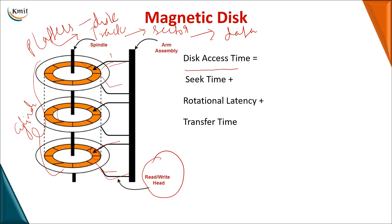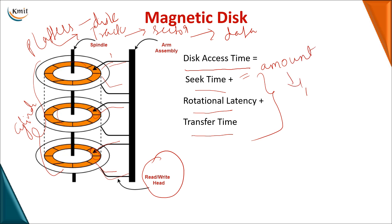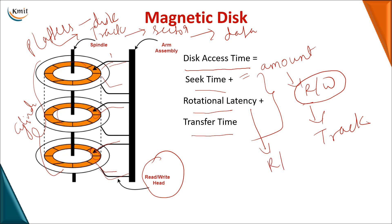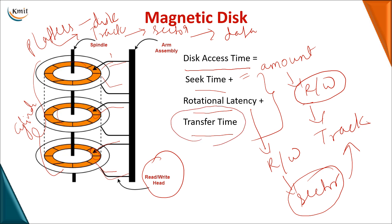The main important component of a magnetic disk is the disk access time. Disk access time is the summation of seek time, rotational latency, and transfer time. Seek time is the amount of time required for the read-write head to be placed onto the specified track. Rotational latency is the time required to place the head onto the required sector within that track. Transfer time is the amount of time required to read or write the data. Together, these three make up the disk access time.